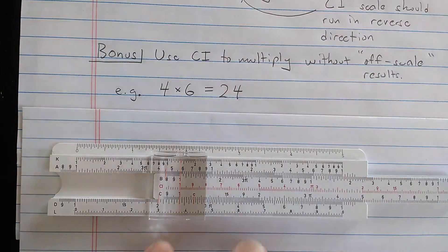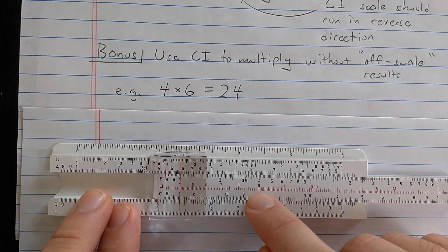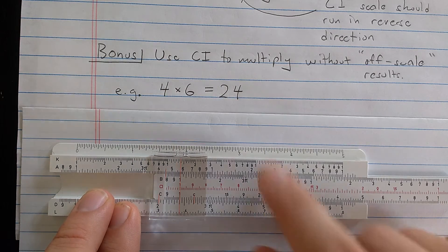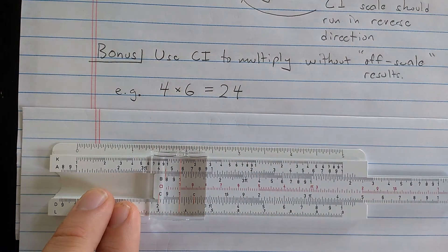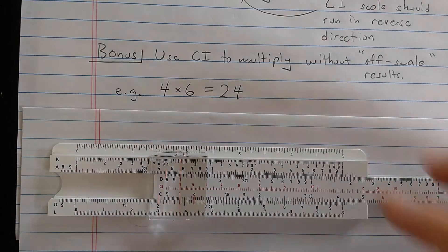which I will interpret as 24 on the D scale. So I've used it kind of like I use the C scale for division. I use the CI scale for multiplication, aligning the two numbers that I want to do, 4 and the 6.